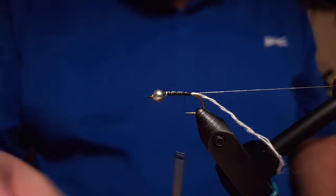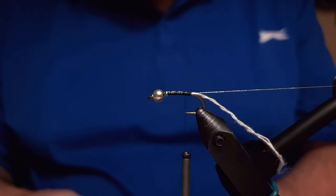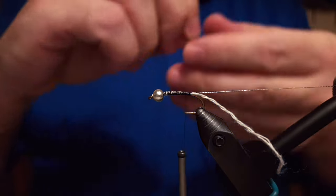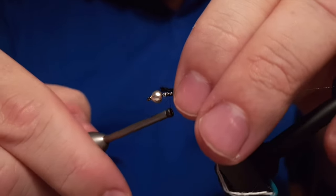Then comes the body material, which is black wool or black Aurora yarn. It doesn't really matter which, as long as it's black it will do its job.